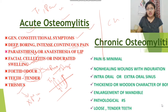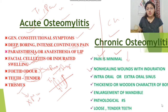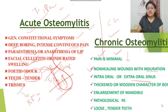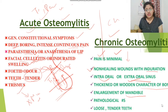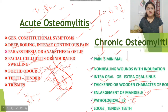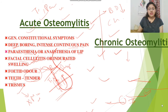Chronic osteomyelitis symptoms: pain is minimal compared to acute. Pain changes to a dull ache. There are non-healing wounds with induration, and intra-oral and extra-oral sinuses form — the infection in the bone breaks through oral mucosa forming sinus tracts. There is thickening with wooden characteristics and enlargement of the mandible, pathological fractures due to decreased bone density, and loose and tender teeth.